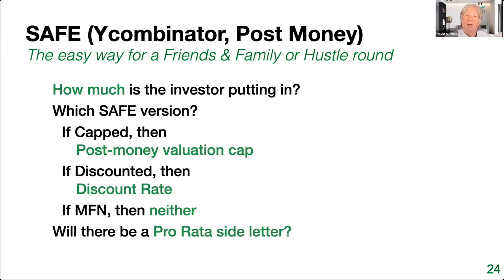Another thing to ask yourself is whether there should be a side letter. A side letter is something outside the SAFE contract. The pro-rata side letter says that the investor in the SAFE will have the ability to invest up to the same percentage in the next financing round — that's a good thing for investors, and some will insist on it. If they want it, instead of modifying the SAFE, you will do a side letter. There's no separate term sheet here because the term sheet is the actual SAFE document itself — you just fill in the blanks and away you go.